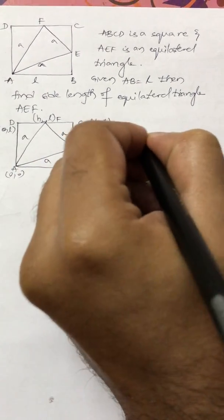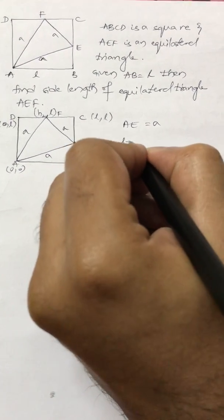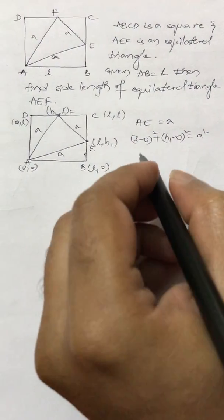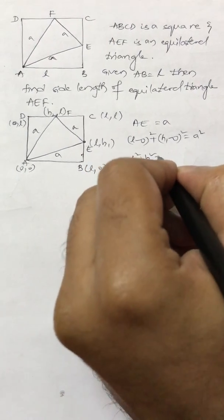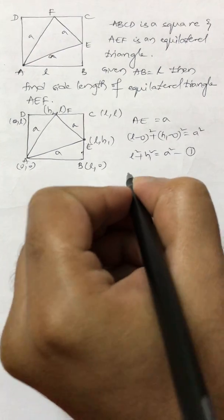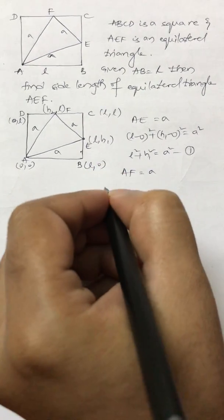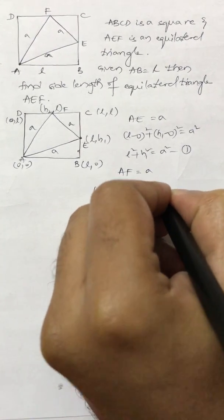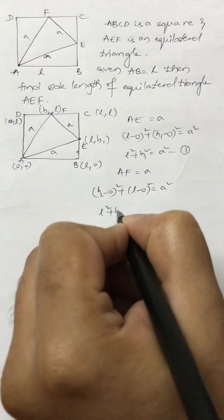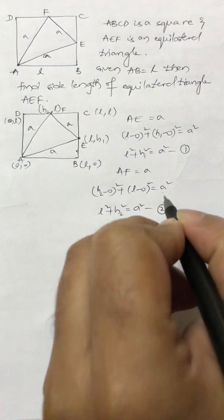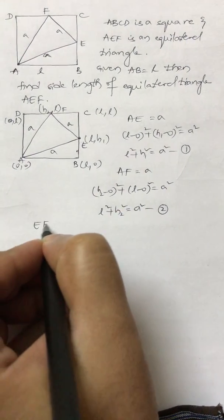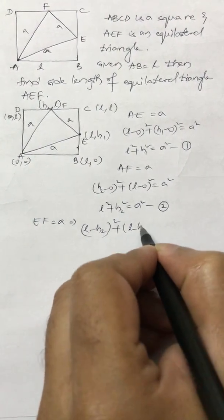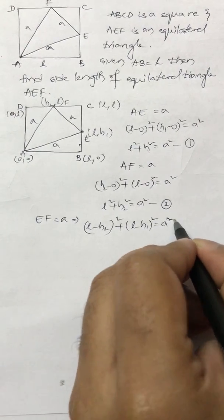So AE equals a, which means: l² + h1² = a². This is equation 1. And AF equals a, so h2² + l² = a². This is equation 2. Again, EF equals a, so (l − h2)² + (l − h1)² = a². This is equation 3.